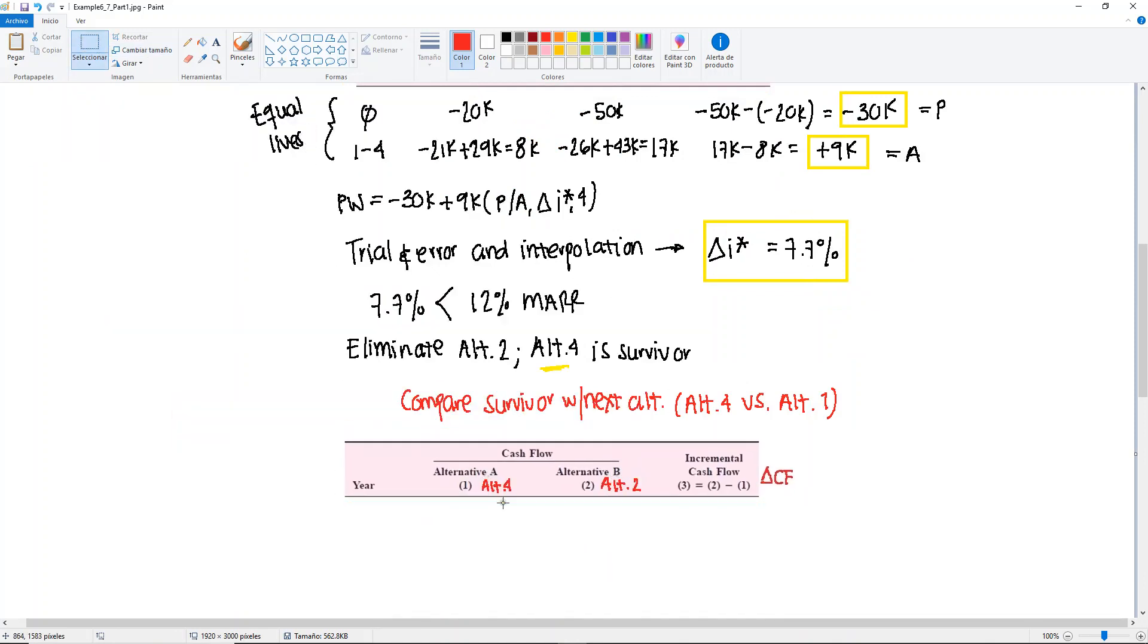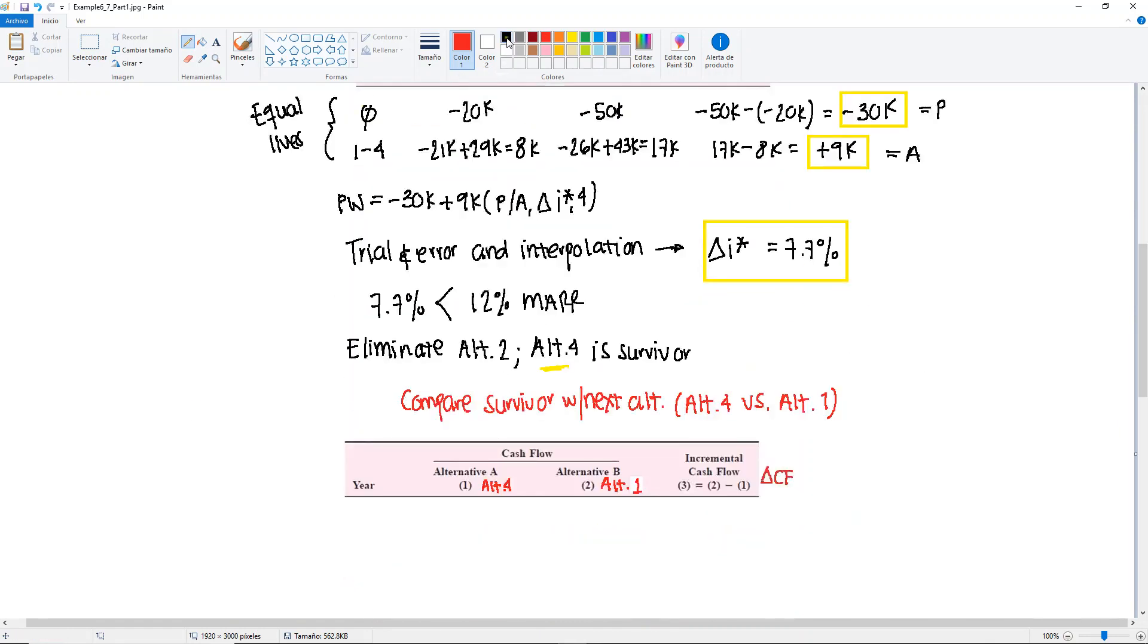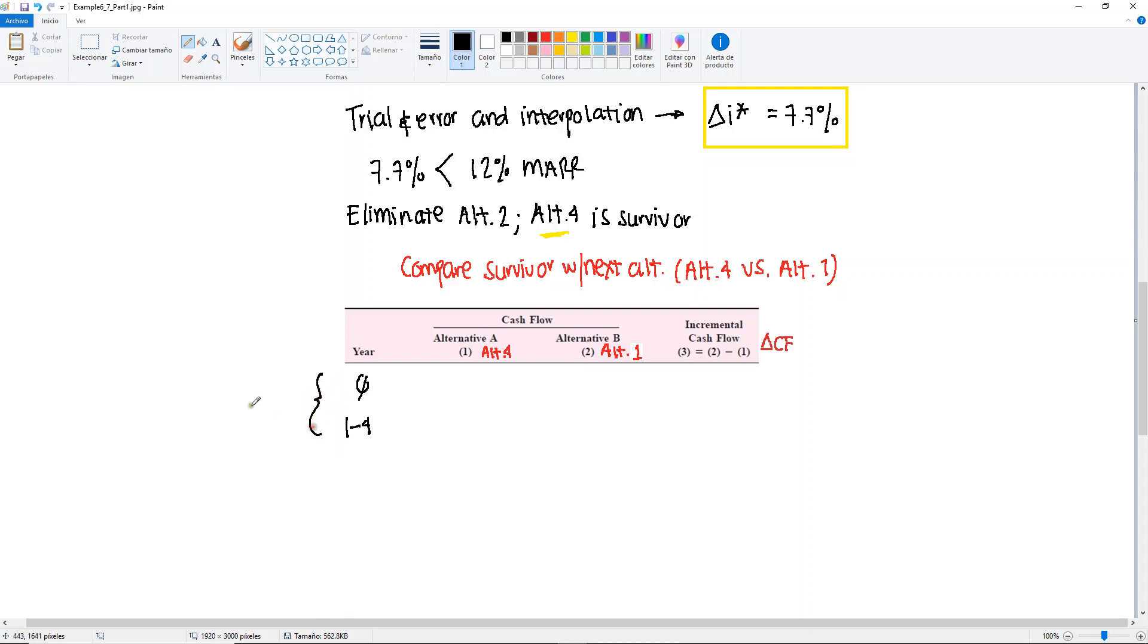In this case, let me change this, we're going to change this one to alternative 1 because we keep alternative 4. Again, these two, 4 and 1, they have equal lives so we can continue to do the short versions of the table. We're going to have year 0 and years 1 through 4, and again, just the side note saying that this is for equal lives.